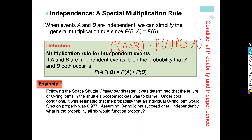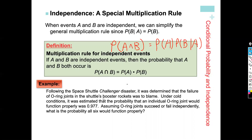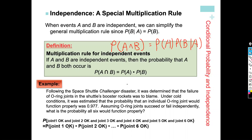Remember: 'or' probabilities we add, and 'and' probabilities we multiply. So we multiply the probability of the first working times the second times the third, and so on. Since these are independent, 0.997 stays the probability for each. So it's 0.997 times 0.997 six times, which is 0.997 to the sixth power — which is about 0.82.